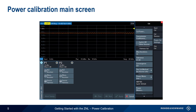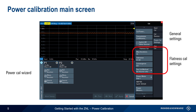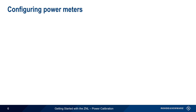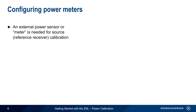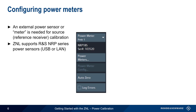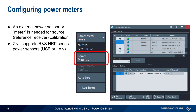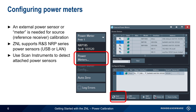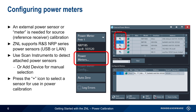The Power Calibration GUI has four main areas: the Power Calibration Wizard, General Settings, Flatness Calibration Settings, and Power Meter Settings. Since source or reference receiver calibration requires the use of a power meter, let's start with Power Meter Settings. An external power meter is needed when performing source or reference receiver calibration. The ZNL supports most Rohde & Schwarz NRP Series power sensors, including both USB and LAN models. These sensors are configured under the Power Meter tab. Clicking on this tab brings up a list of connected power sensors. Scan Instruments can be used to automatically detect attached power sensors, or Add Device can be used to configure them manually. Press the plus icon to the left of a power sensor to select it for use in power calibration.